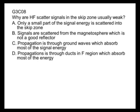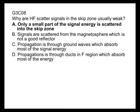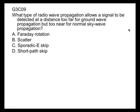Why are HF scatter signals in the skip zone usually weak? Only a small part of the signal energy is scattered into the skip zone. What type of radio wave propagation allows a signal to be detected at a distance too far for ground wave but too near for normal sky wave propagation? The answer is scatter — too far for ground wave, but too near for a normal sky wave.